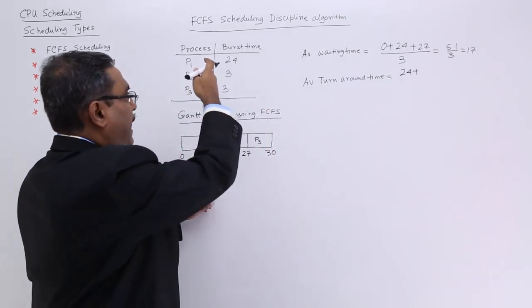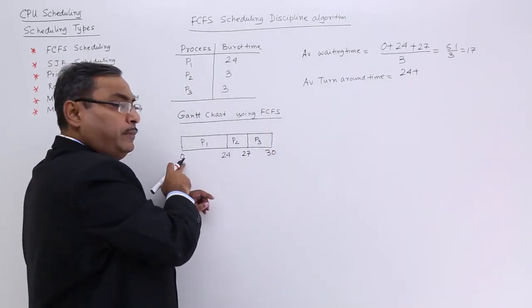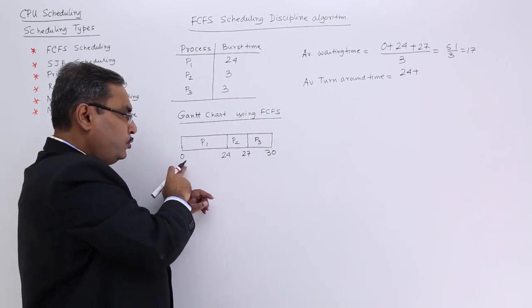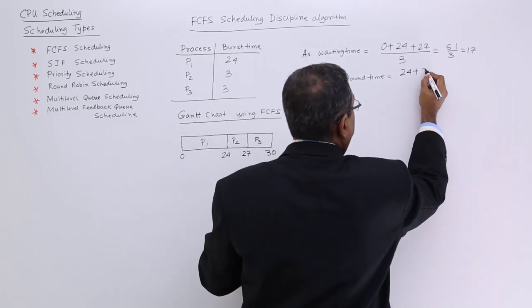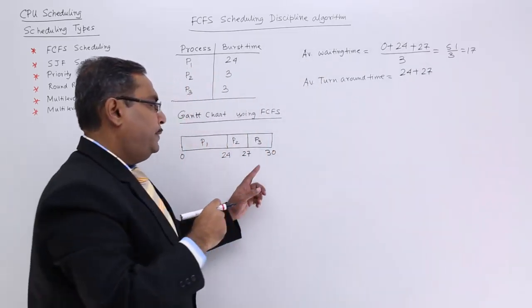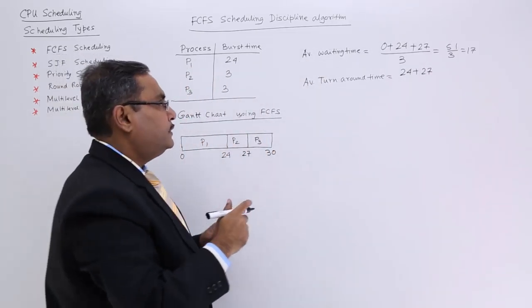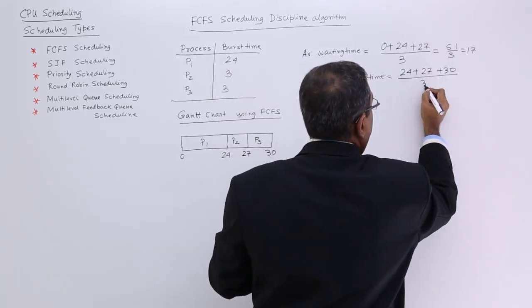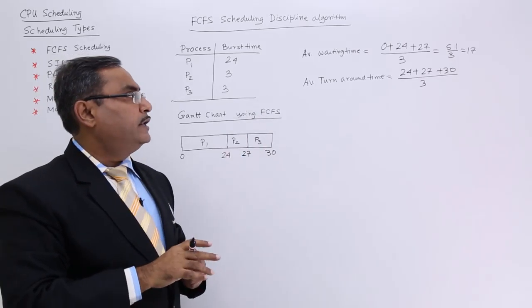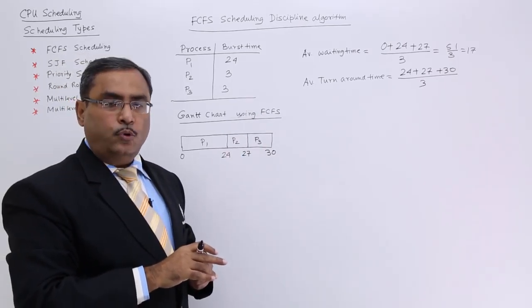For P1, the turnaround time is 24. All processes arrived at instant 0, so P2 will have a turnaround time of 27 and P3 will have a turnaround time of 30. Calculating the average gives you the average turnaround time.